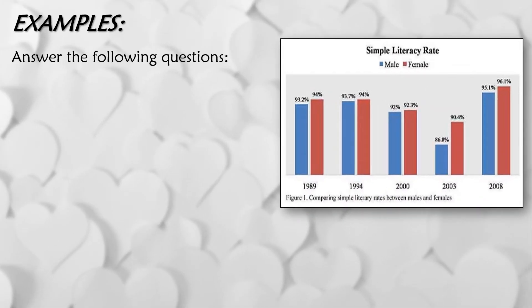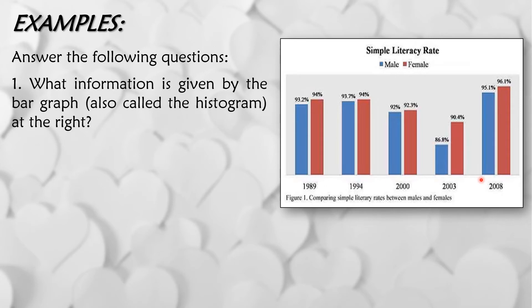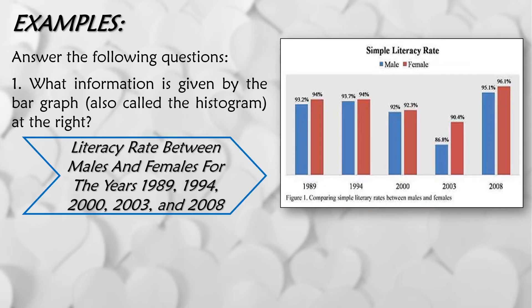So let us now have the examples. We have to answer the following questions using this given graph. So anong uri ng graph na ito? So since meron tayong mga given bars or rectangles, ito ay halimbawa ng bar graph. So first question, what information is given by the bar graph or also called as the histogram above or at the right? So meron tayong given title, comparing simple literary rates between males and females. So yun yung ating information sa given bar graph.